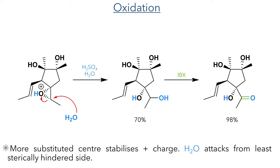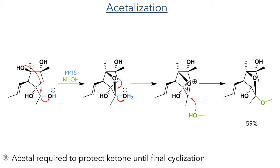The secondary hydroxyl group introduced by this reaction was then oxidized to a ketone again using IBX, which performed the transformation in a 98% yield. The authors found that this ketone would react in further steps to produce unwanted side products, so at this point they protected it as an acetal. This was carried out using PPTS as an acid catalyst in methanol, protonating the ketone and allowing for the intramolecular attack of a tertiary hydroxyl group on the same face of the ring, further forming the methyl acetal in a 59% yield.